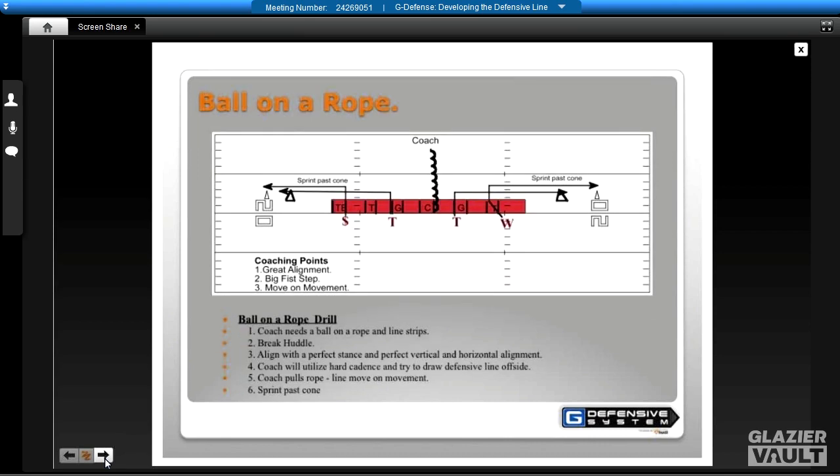Then we come back to the line strip. You can use trash cans for this, which I'm sort of leaning to. We call this ball on the rope drill. Not really that high tech in the name, but what a great drill. What we're looking for is we set up our cones or our trash cans or our line strip. What we're going to do is first work on that great alignment. Do I have a great step? Do I step the stagger? Do I move on movement? The coach needs the ball on a rope in his line strips. They break the huddle. We align perfectly with perfect vertical and horizontal alignment. Be perfect in your alignment. The coach will utilize the hard count and try to draw the defensive line offsides.